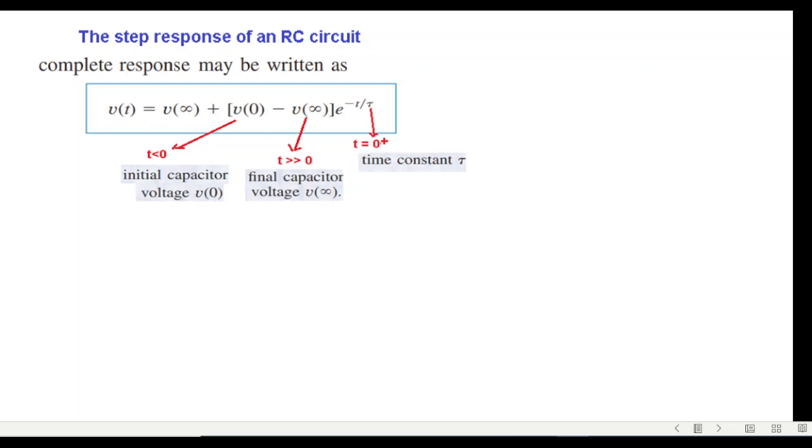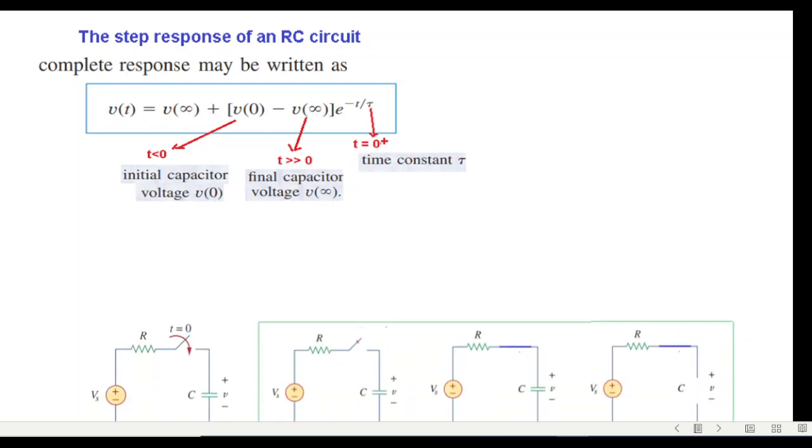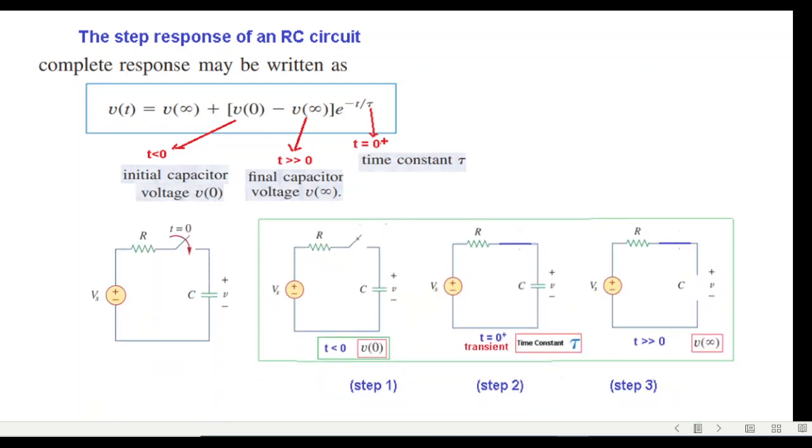I'm going to calculate from this formula v(t) at t equal to zero plus - that means in the transient condition. In this circuit, the switch is closed and t is equal to zero. When t less than zero, the switch is open.